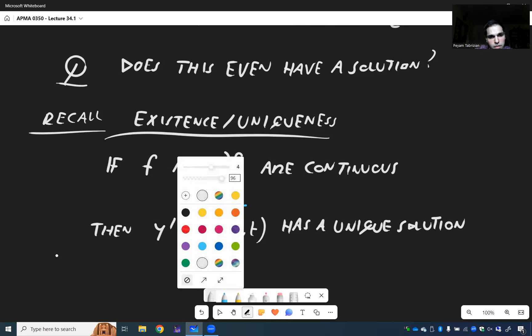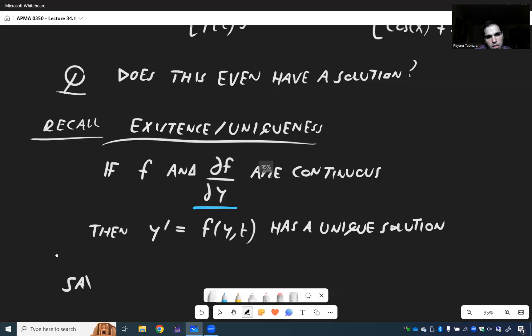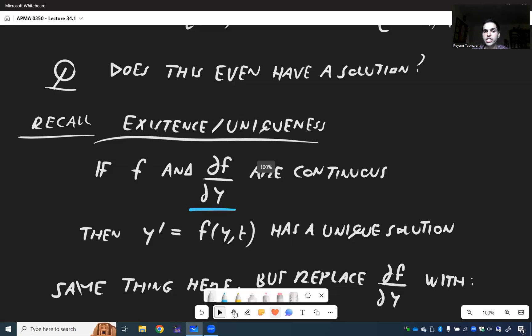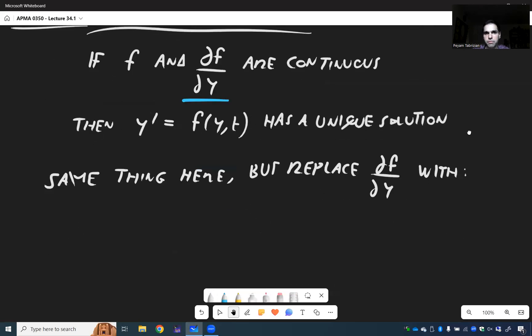So same thing here, but we replace partial f over partial y with what's called a gradient, and that's really where you differentiate the hell out of everything. So definition: the gradient of f.